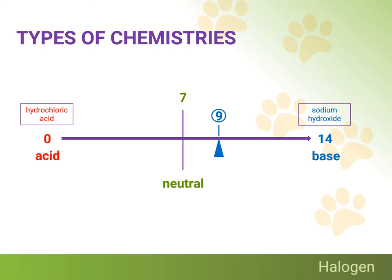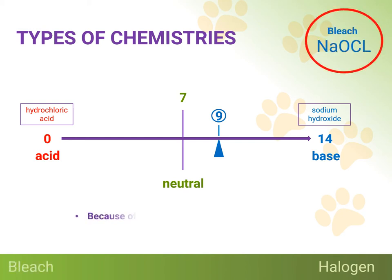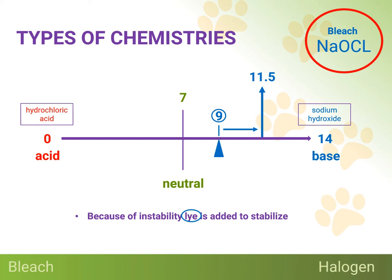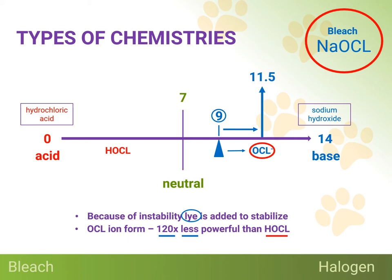The first of the three chlorine products I'm going to discuss is the one most familiar to everyone: bleach, or sodium hypochlorite. Because bleach is so unstable, it needs to be stabilized by the addition of lye, which brings its pH up to 11.5. And because a pH of 11.5 is higher than the chlorine equilibrium tipping point of 9.0, the chlorine in bleach will exist mostly in the hypochlorite ion form. As was stated previously, the hypochlorite ion form of chlorine is 120 times less powerful than the hypochlorous acid form as a disinfectant. The bottom line is that bleach is far less effective than you may think as a disinfectant, with numerous properties that really disqualify it from being a suitable choice for use in animal care facilities. Consider some of the following bullet points.